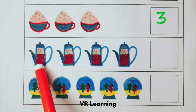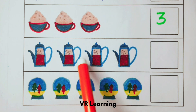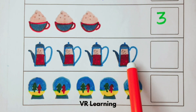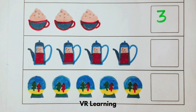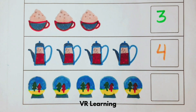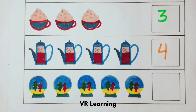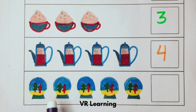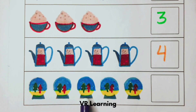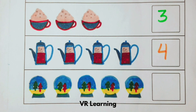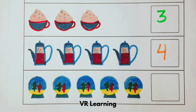One, two, three, four. Write number four in the box. One, two, three, four, five. Write number five in the box.